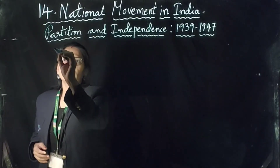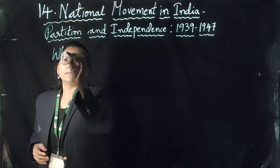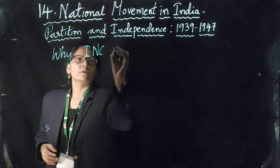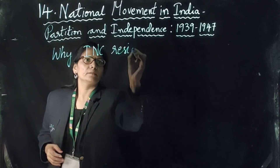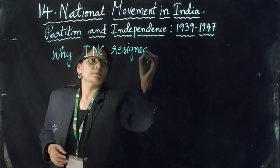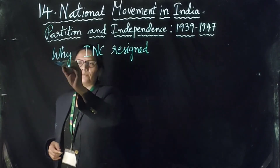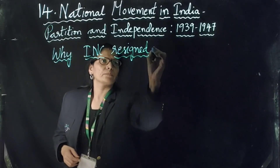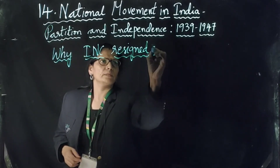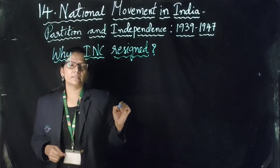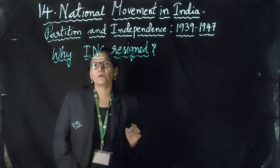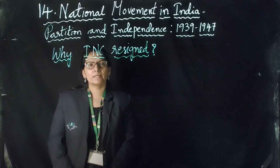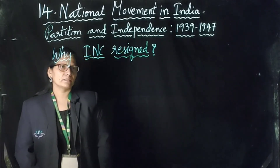We will discuss why the Indian National Congress resigned from the provisional government. As we know, in 1937, the provisional government was formed by the Indian National Congress after winning a majority of provinces in British India. But why did they resign?